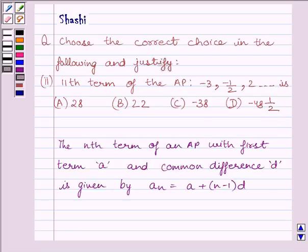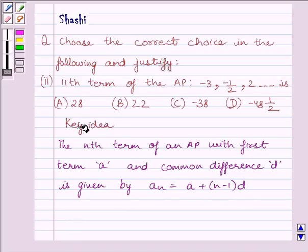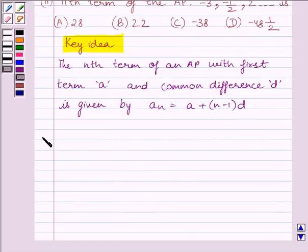First of all, let us understand that the nth term of an AP with first term a and common difference d is given by a_n = a + (n-1)d. This is the key idea to solve the given question. Let us now start with the solution.